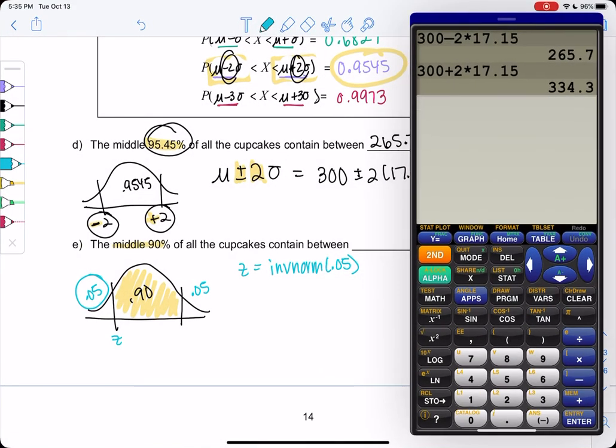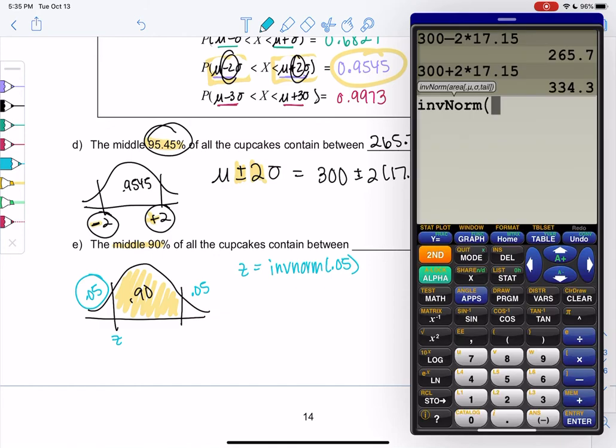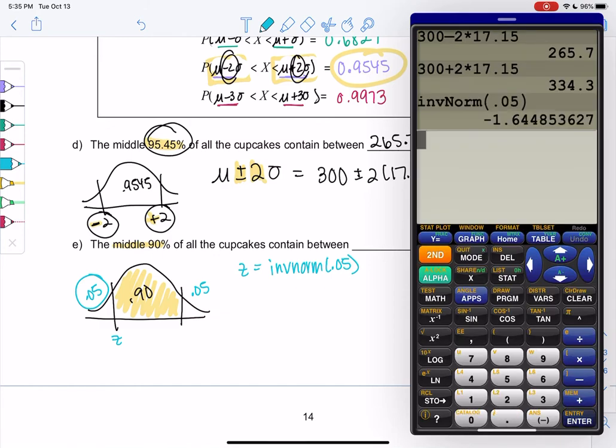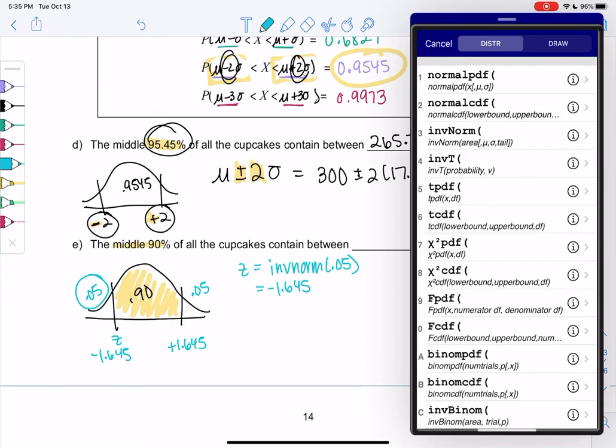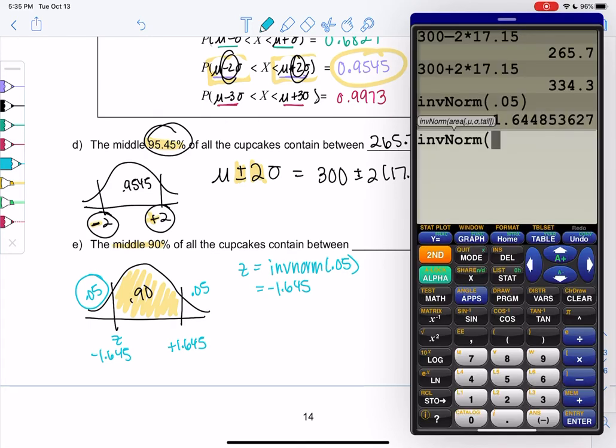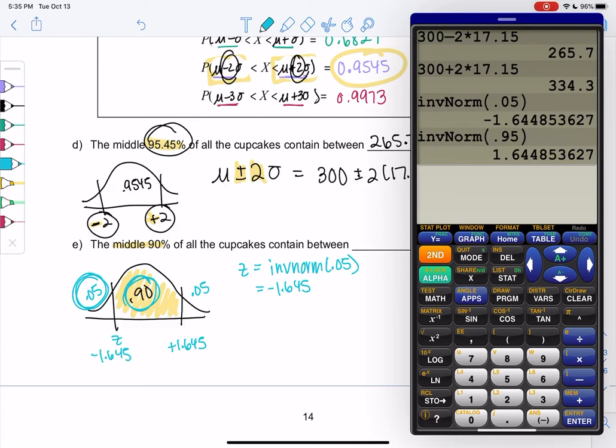Second distribution, inverse norm, 0.05. And we get negative 1.645. And so we might be catching on from this section, the other one is actually just going to be the same z-score, but positive, thanks to symmetry. It's nice and symmetric. But if you weren't sure, you would do second distribution, inverse norm, and then you would just do 0.95 for the 0.05 and the 90 combined. But you're wasting your time. Take advantage of symmetry. So positive 1.645.